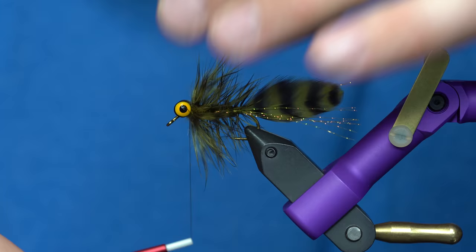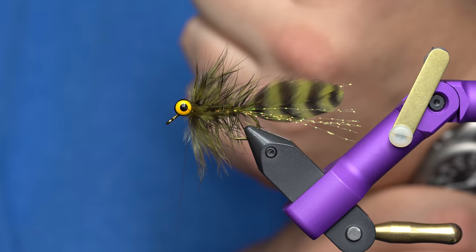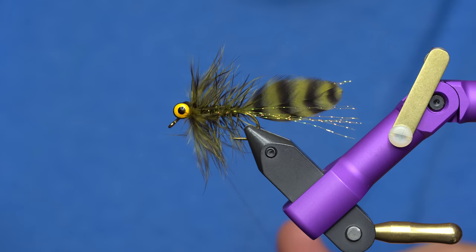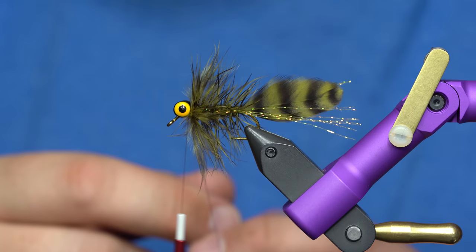From here, this is just kind of my own flare. This is how I would finish this fly as far as building a head. You can just dub some dub onto your thread and figure it between the eyes but I like to do a dubbing loop. So I'm going to build a loop and close it off and then build it with the same stuff we used in the body.